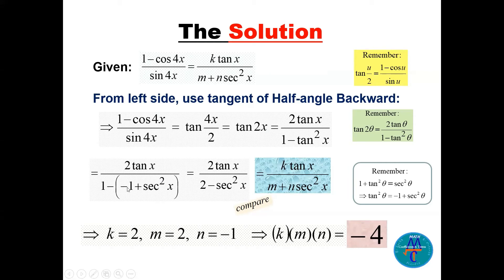So 1 minus times minus 1 becomes 1, so there's a 2 there, minus secant squared x. Now compare here: k is 2, m also is 2, and n is the coefficient of secant squared x, which will be minus 1. So when you multiply k times m times n, you will get minus 4.